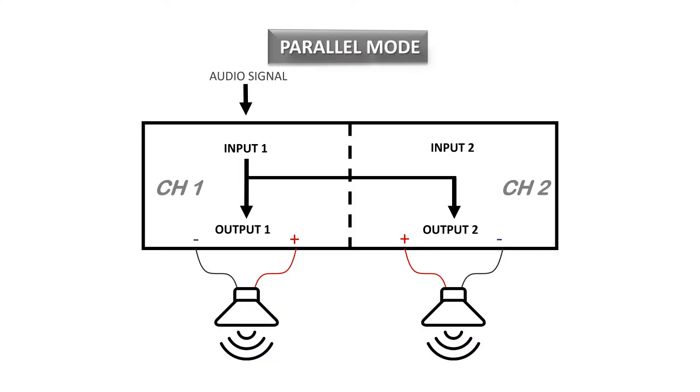In parallel mode, the input of channel 1 goes to the output of both channels 1 and 2, while the input of channel 2 is disconnected. Both channels still have separate level controls and processing. Parallel mode is often used when you need to send one audio signal to multiple speakers — for example, a bunch of stage monitors across the front of a very large stage.